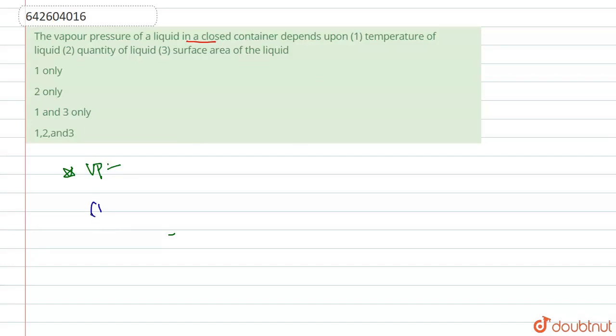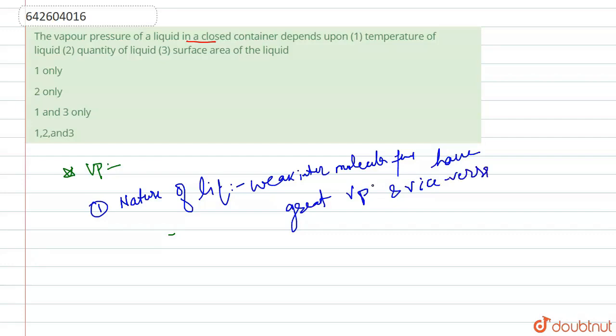So vapor pressure depends on two factors. First one is nature of liquid. Liquid having weaker intermolecular force have great vapor pressure and vice versa.